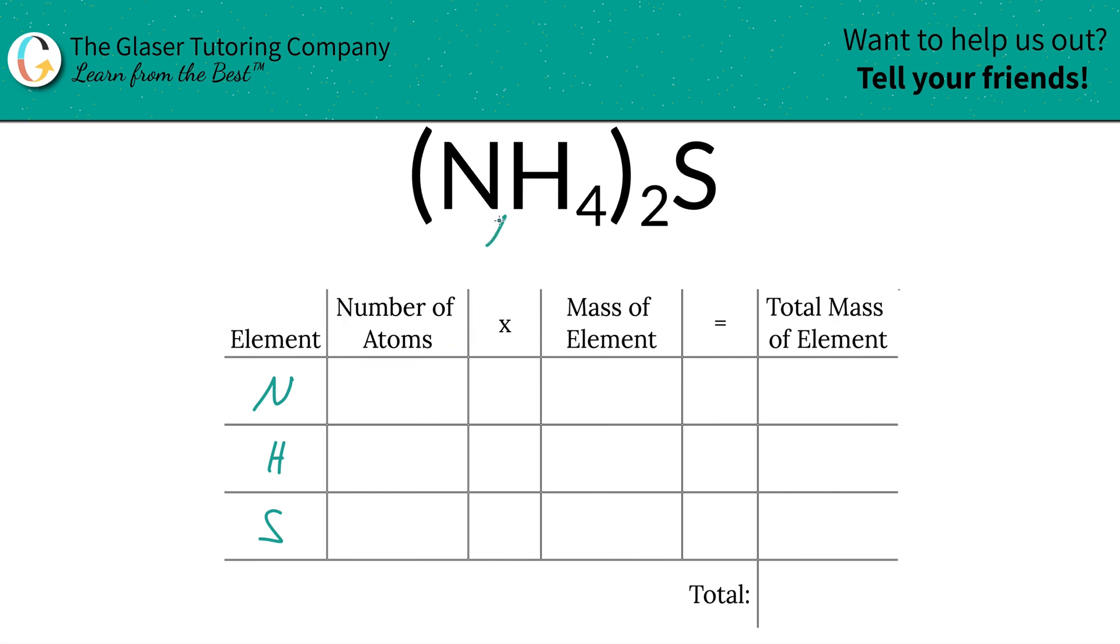Next is to identify the number of atoms of each, and that's where the subscripts come into play, of each atom that is. Now if you don't see a subscript there for that atom, put in a one.